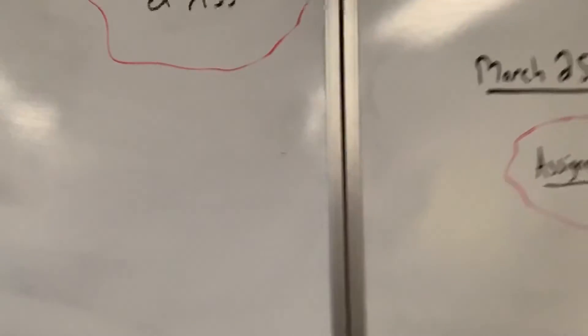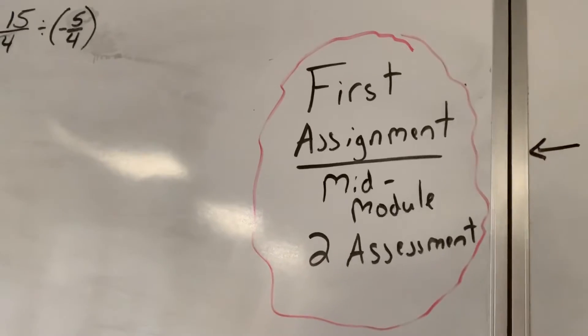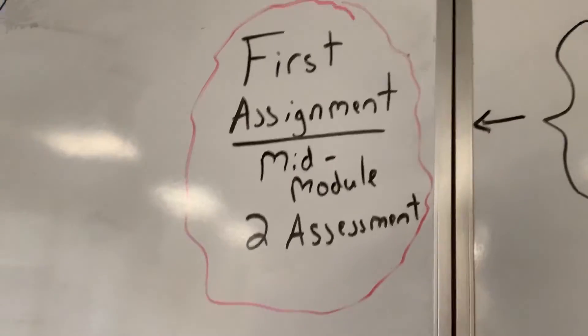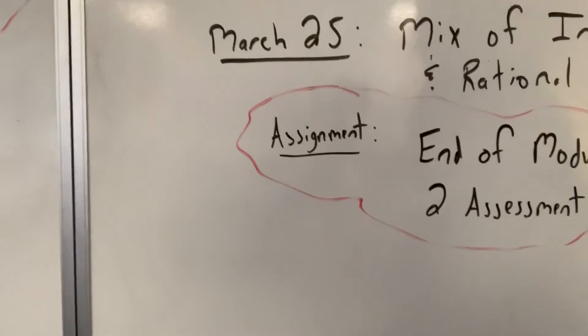Okay, so this is March 25th. It's a mix of integers and rational numbers. You should be done with this mid-module 2 assessment. You should still have those in your binders so you can take a look. If not, feel free to email me. You should be starting on this end of module 2 assessment.